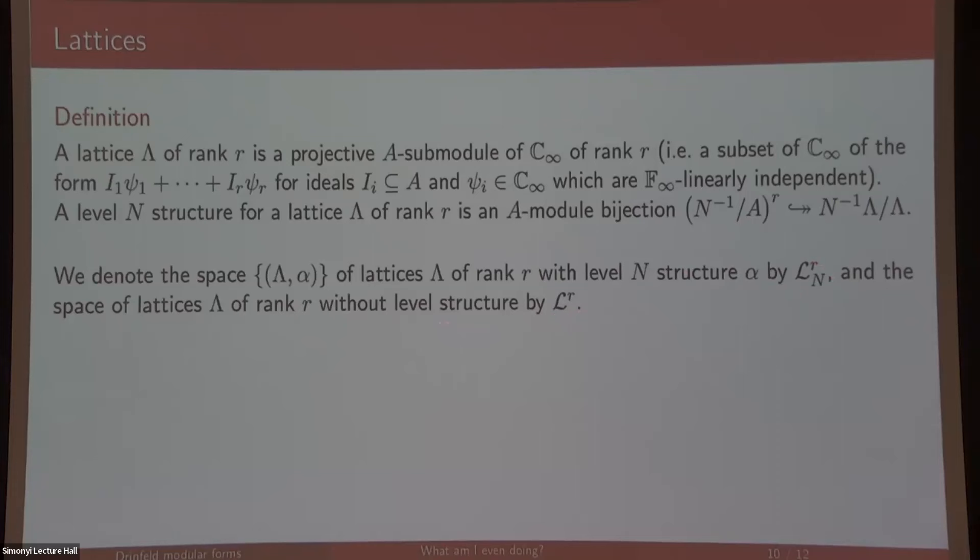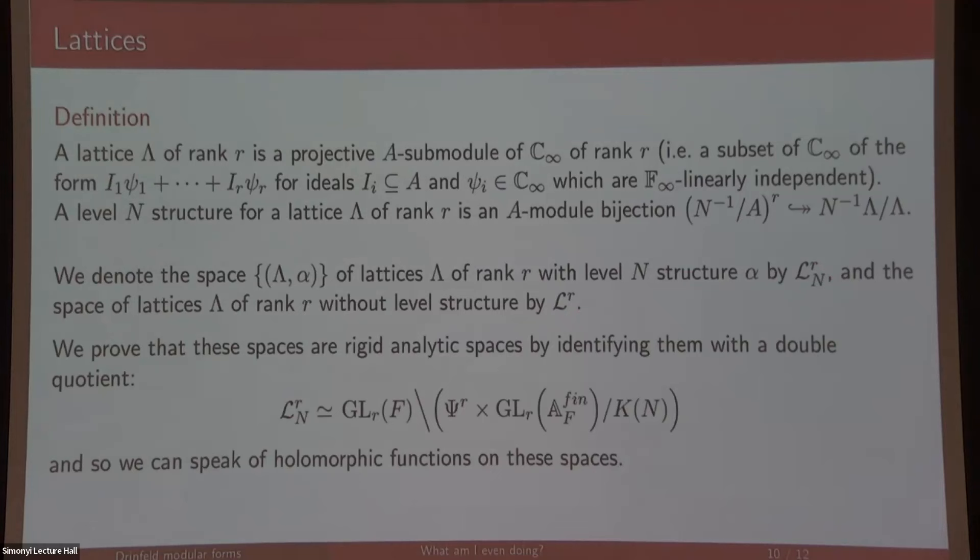We can give analytic structure to this space by identifying it with a double quotient. This is very similar to what Drinfeld did in his original paper where he did work towards the Langlands conjecture. We can give analytic structure to these spaces of lattices with level structure, and because we can give analytic structure to them we can define what a holomorphic or analytic function is. That's one of the three ingredients we need to define modular forms.